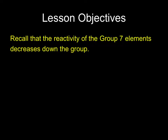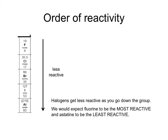You need to be able to recall the reactivity of the group 7 elements and how they vary down the group. We saw in the experiment that chlorine will displace bromine, so chlorine is more reactive than bromine, and bromine will displace iodine, so bromine is more reactive than iodine. Reactivity decreases as you go down the group.